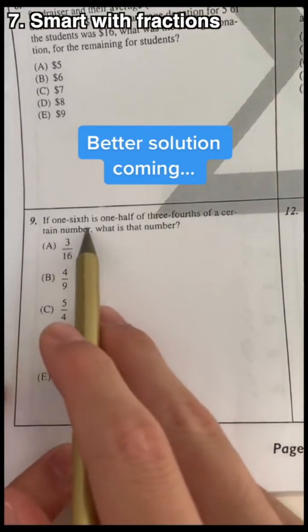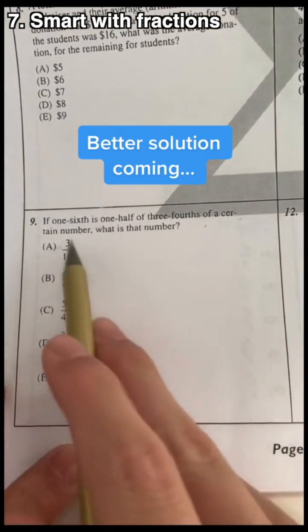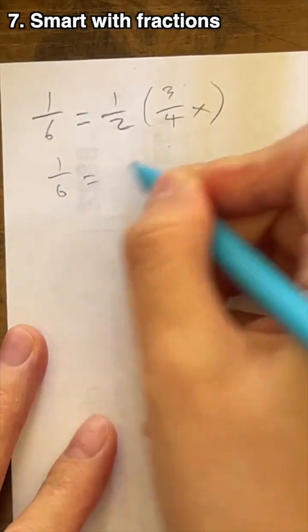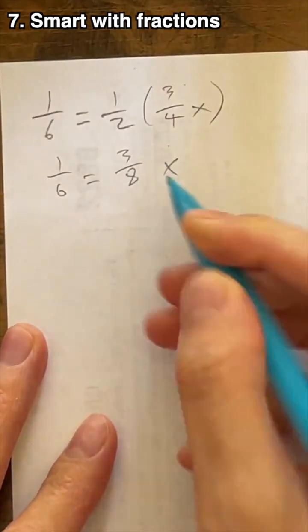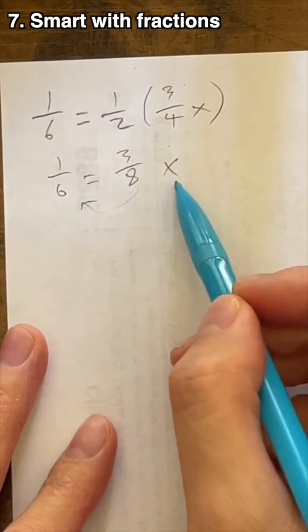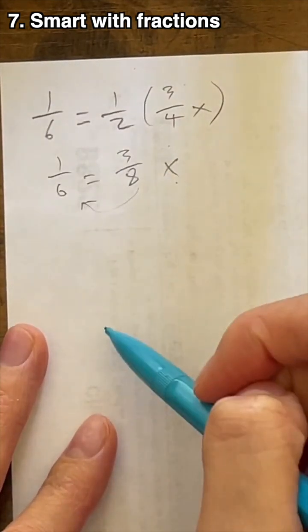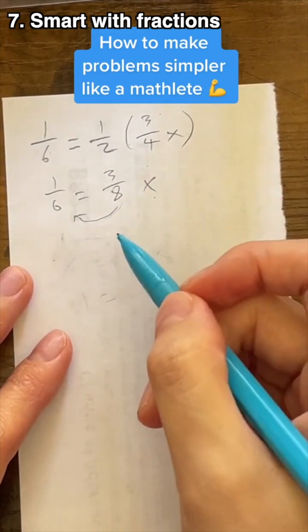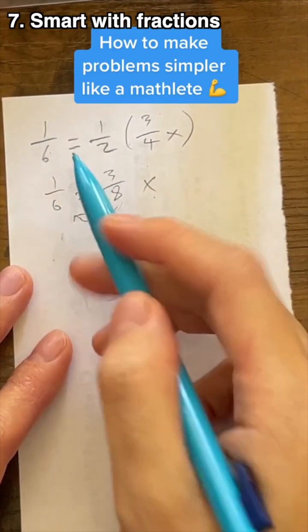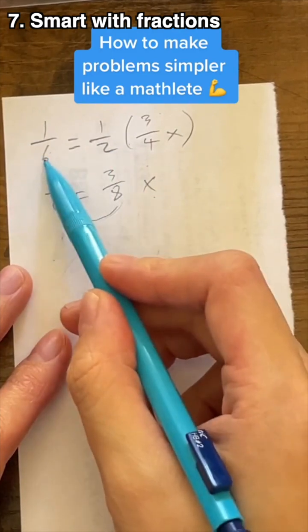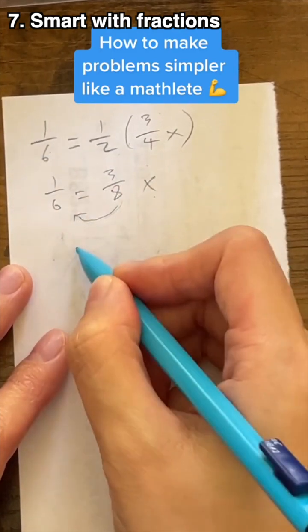If 1/6 is 1/2 of 3/4ths of a certain number, what is that number? This guy had a solution to multiply this over and then do the reciprocal of 3/8ths to this side, which gets x. But here's a better way. The smarter way to solve any problem is to do it in a way such that you have less room for error. So we should see where to simplify first wherever possible. This means we should multiply both sides by 2 to get 1/3 equals 3/4ths x.